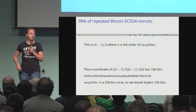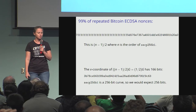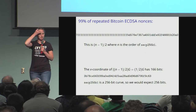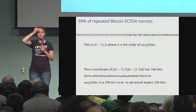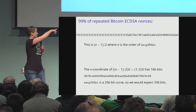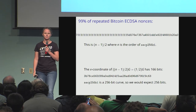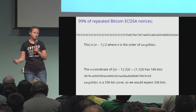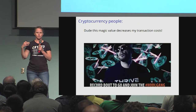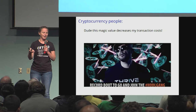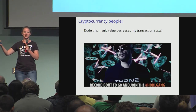It turns out that the x-coordinate of this value times the generator of the curve — which is the same as the x-coordinate of a half times this point — has 166 bits, instead of 256 bits. This has been known to the Bitcoin crowd for some time, and they're all like: this magic value decreases my transaction costs.